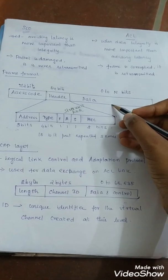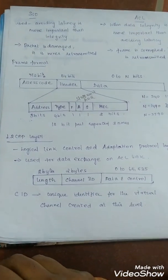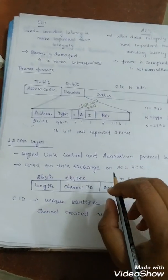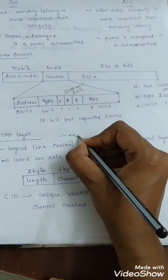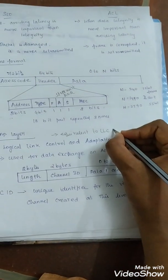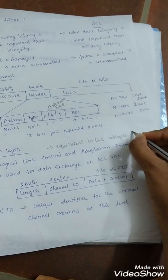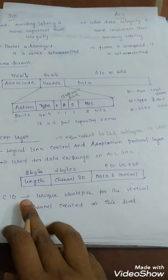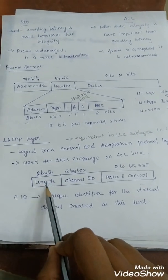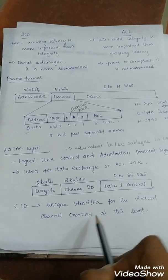Next one: data or payload. It contains data or control information coming from the upper layers. The next layer is L2CAP layer: Logical Link Control and Adaptation Protocol layer. It is equivalent to LLC sublayer in local area networks. L2CAP data packet format consists of length, which represents the size of the data. Channel ID is the unique identifier for the virtual channel created at this level.